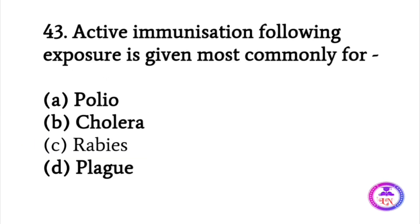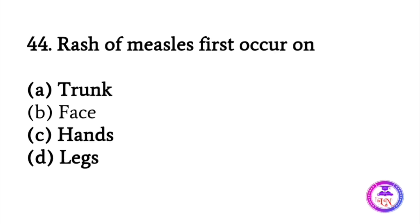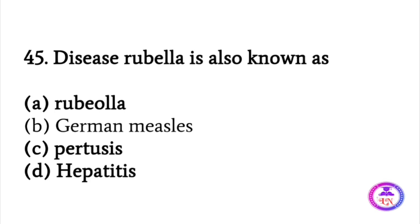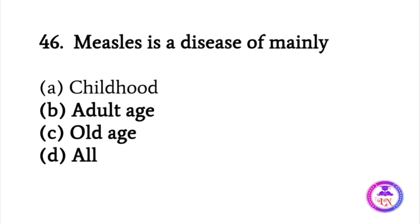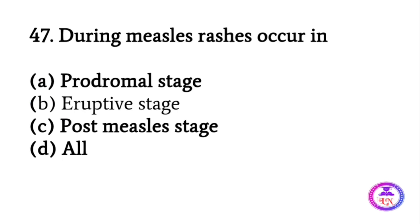Active immunization following exposure is given most commonly for rabies. Rash of measles first occurs on the face. The disease rubella is known as German measles. Measles is a disease mainly of childhood. During measles, rashes occur in the eruptive phase.